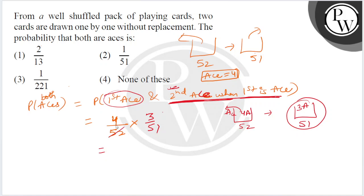My final answer is 1 by 221, so option number 3 is the correct answer. I hope you understood the problem.